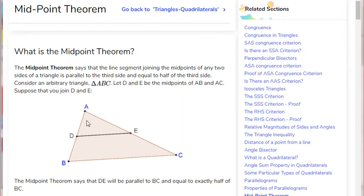It says that the segment joining the midpoints of two sides of a triangle is always half the length of the third side and parallel to the third side. That is the theorem. You can read this.